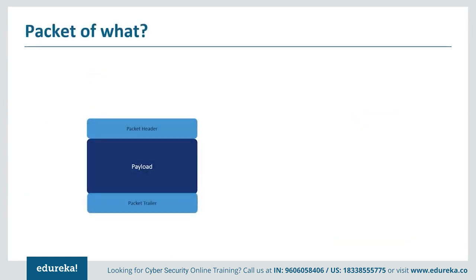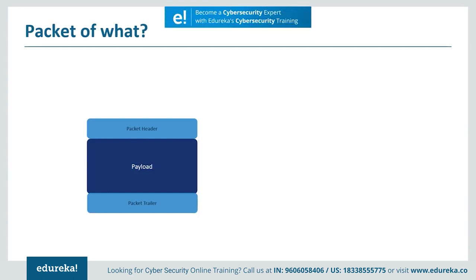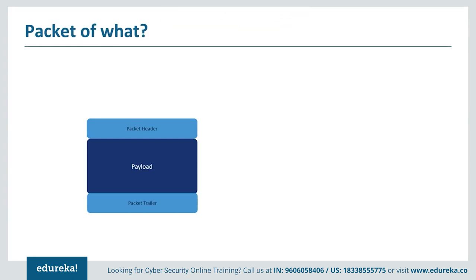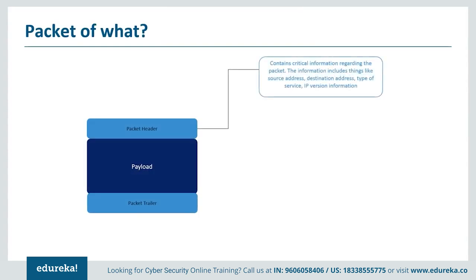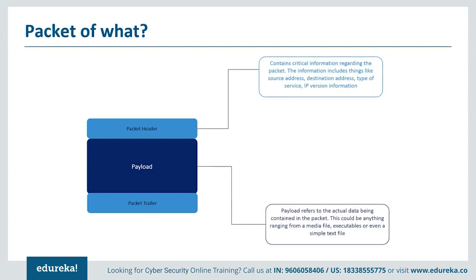The way atoms make up enormous objects, data packets come together to form one big file. They can be considered the atom of a network, and like an atom, a data packet also has a pretty complex structure which can be broken down into three significant parts: namely the packet header, which generally contains critical information about where the packet is coming from and where it is headed; the payload, which is basically the data contained by the packet; and the packet trailer, which is just data to signify the end of a packet. Out of the three, the packet header is the most important to understand.